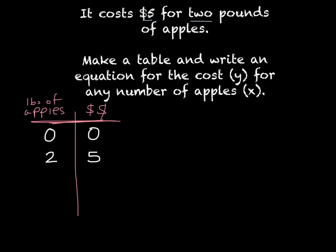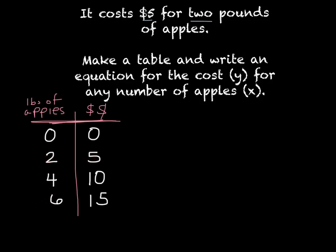I can pretty easily find out what 4 pounds cost by doubling the amount of pounds and doubling the money, so 4 pounds would cost $10. I could also figure out what 6 pounds costs by tripling 2 pounds — triple the 5 — so it would be $15 for 6 pounds.